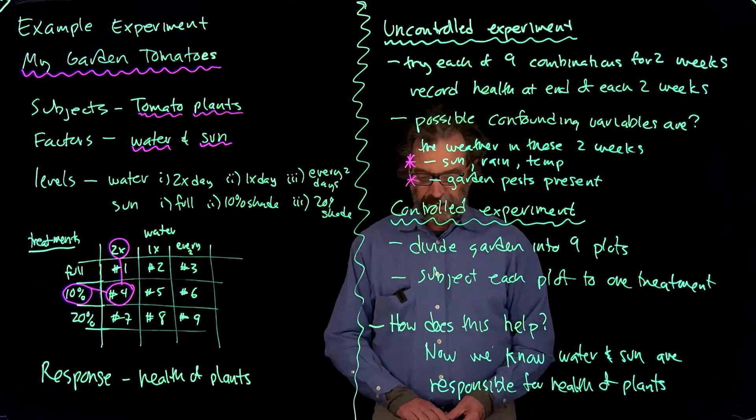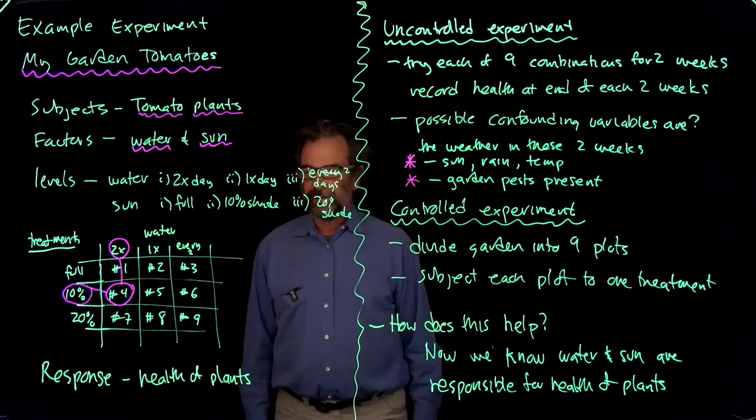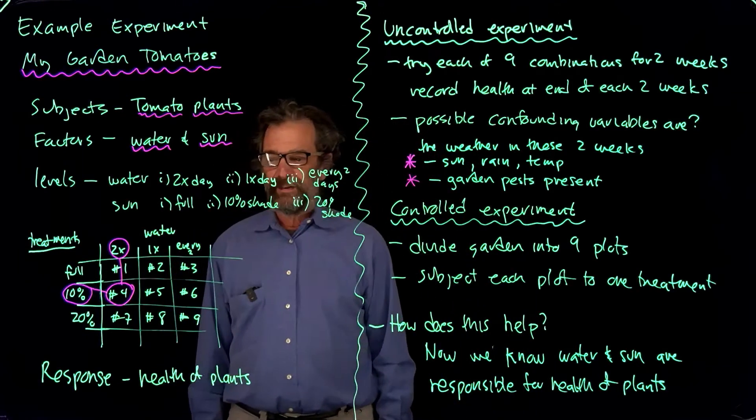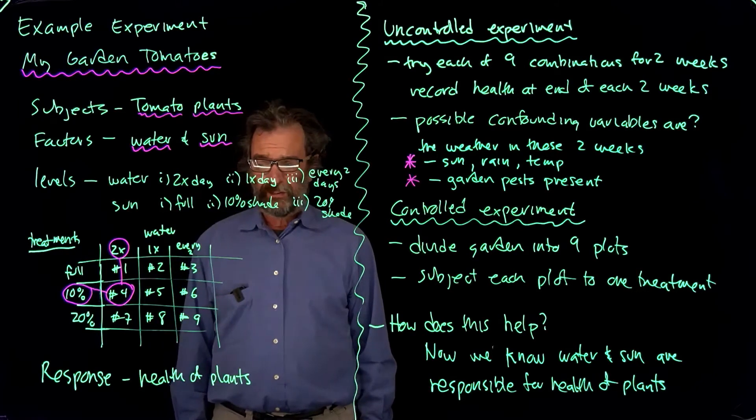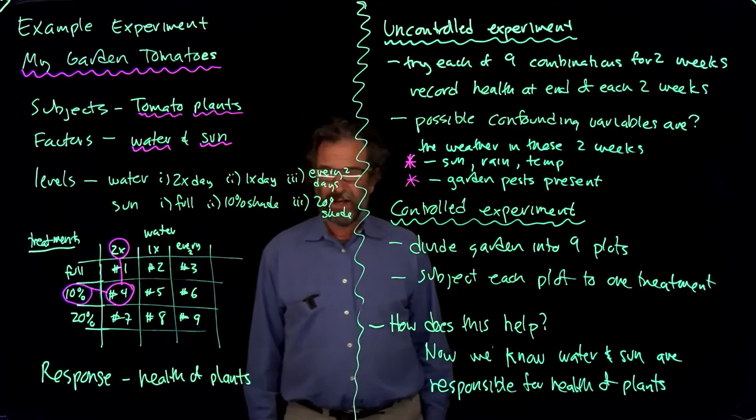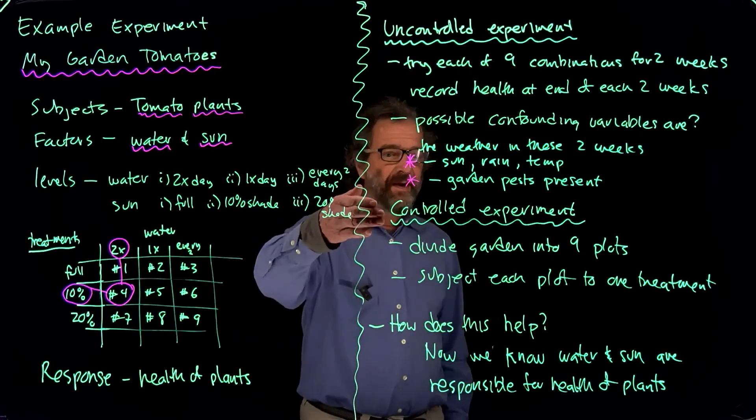Of course, maybe that's not how you garden. Maybe you change the watering and the sun depending on the part of the summer. When it's really sunny, maybe you want some shade. When it's not, maybe you have zero shade. It gets more complicated. But this simple experiment just says what general strategy would work if you applied it over the whole summer to give the healthiest plants. And this would be the best way to figure it out.